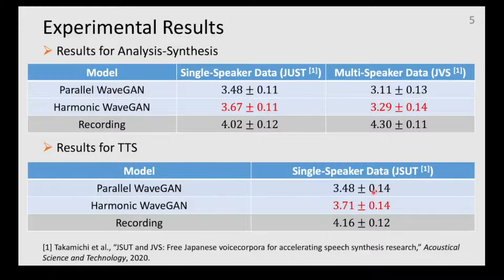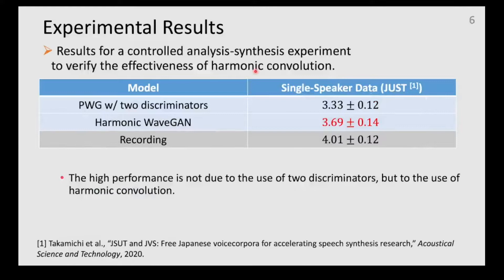Similar results were obtained with a TTS system. The figure shows the results of an experiment comparing Harmonic Wave GAN with PWaveGAN using two discriminators. The results suggest that the better performance of Harmonic Wave GAN is not due to the use of two discriminators, but to the focus on harmonic structure.